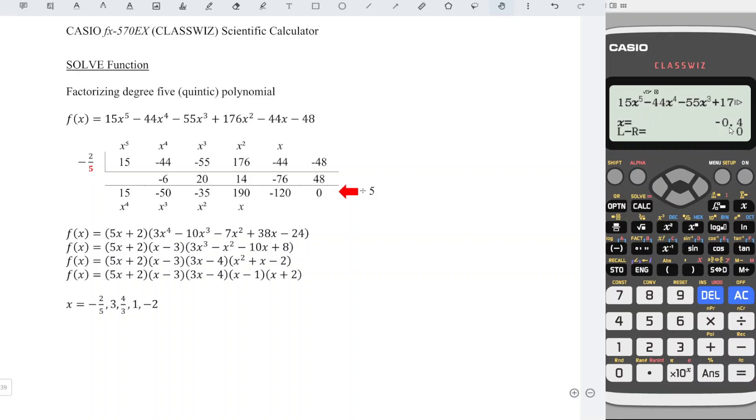Then we will obtain the root negative 0.4. Press the number negative 0.4, and we should obtain the fractional number. So from here, we can see that x equal to negative 2 over 5 is a 0.